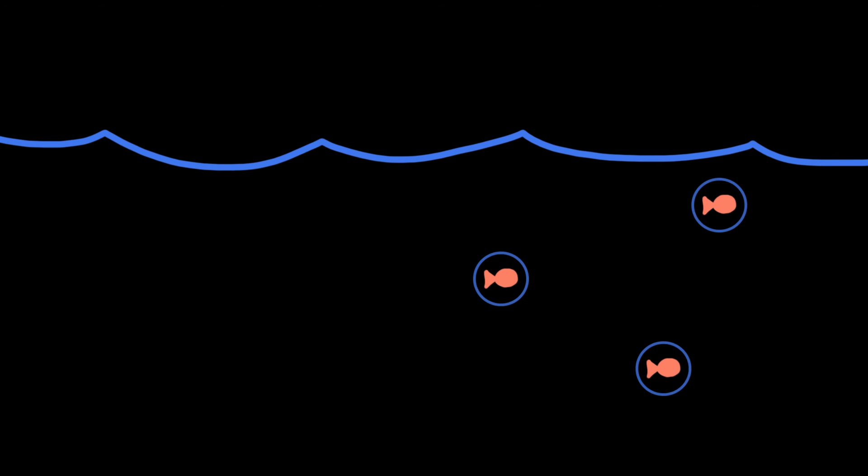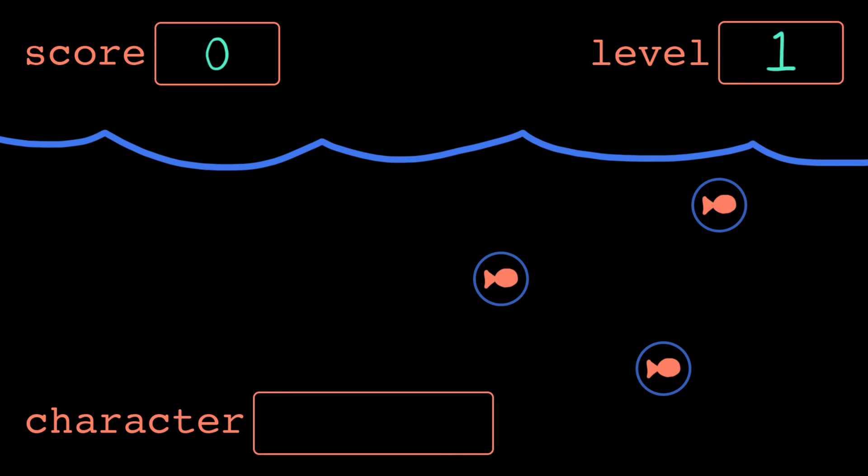How might we use variables in a real program? Say we're building a game. What data might we need to keep track of? Well, we might need to remember the player's current score, what level they're on, and what character they selected. As the program runs, we'll need to update these values over time, like maybe when the player collects an item, their score increases by five.